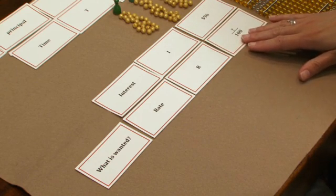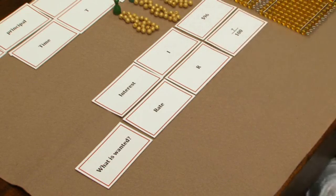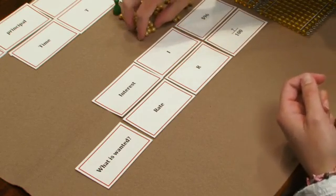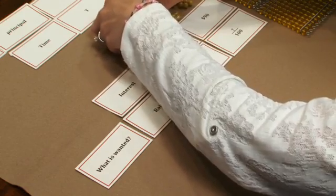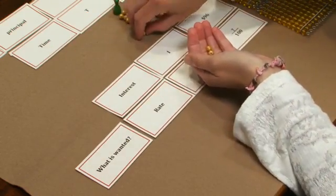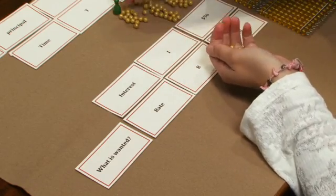And the information that we know about the rate is that it's per $100. So we're going to take the total interest that we gained in one year, and we will distribute that evenly amongst our 100 squares.